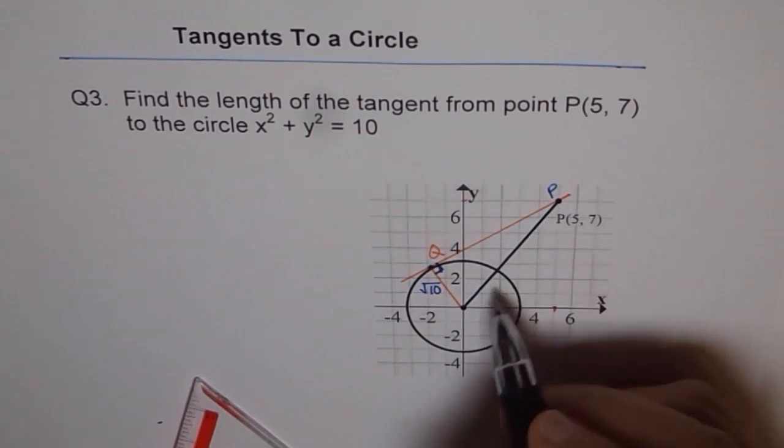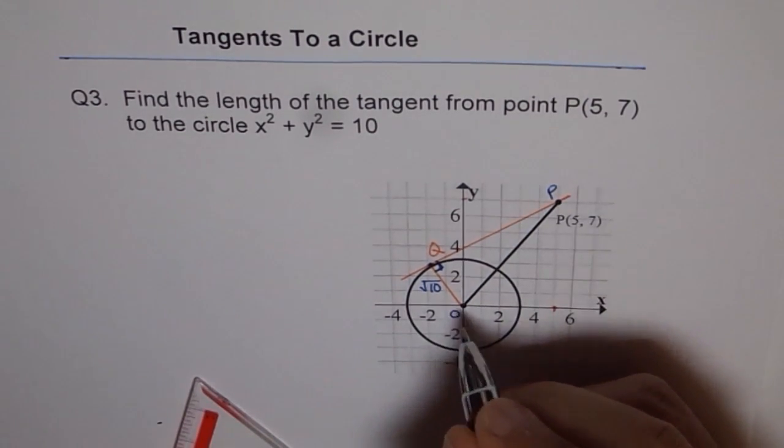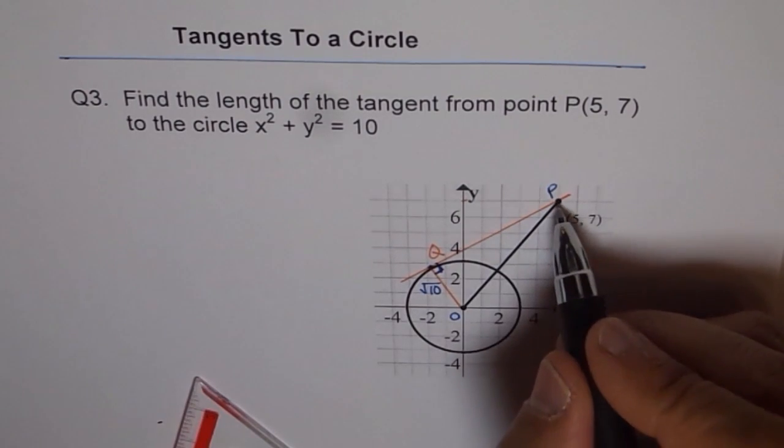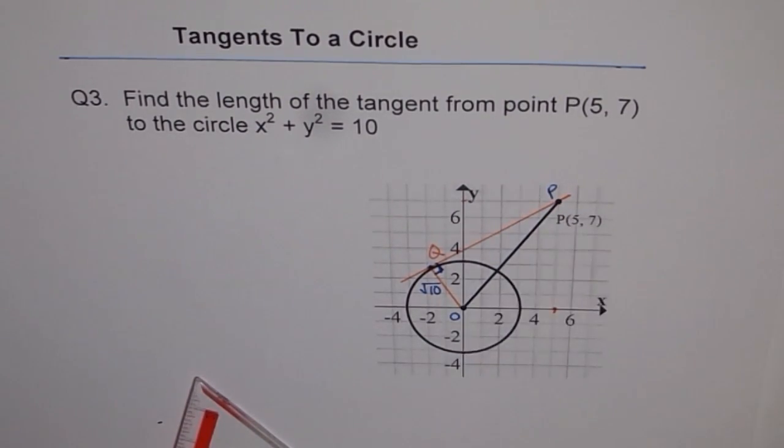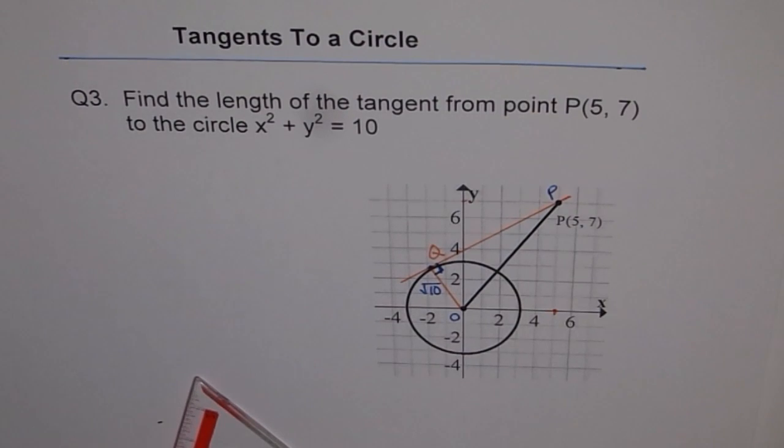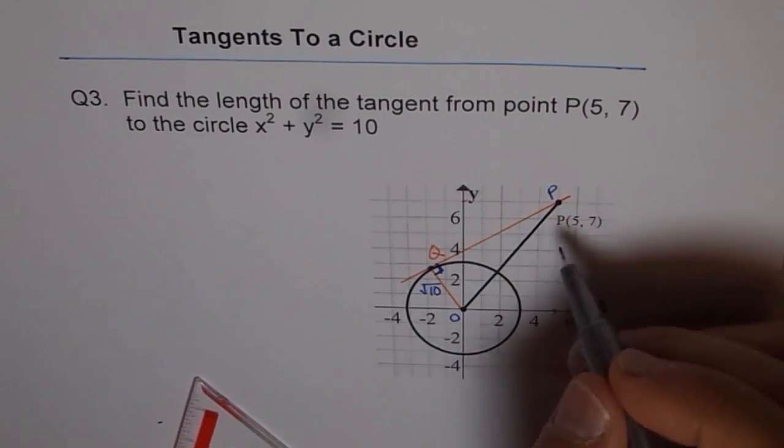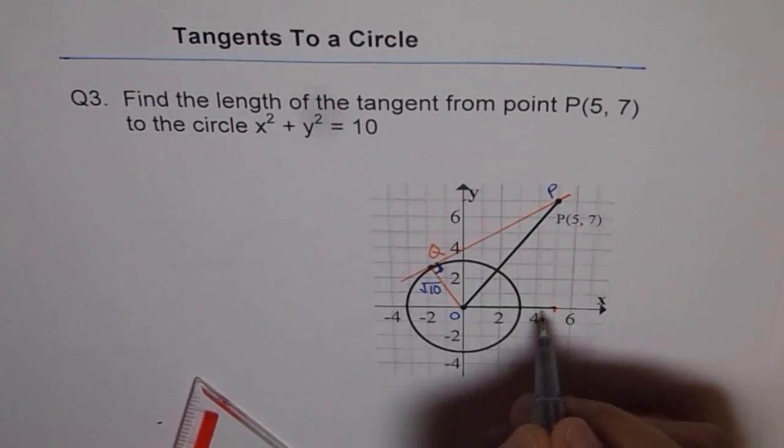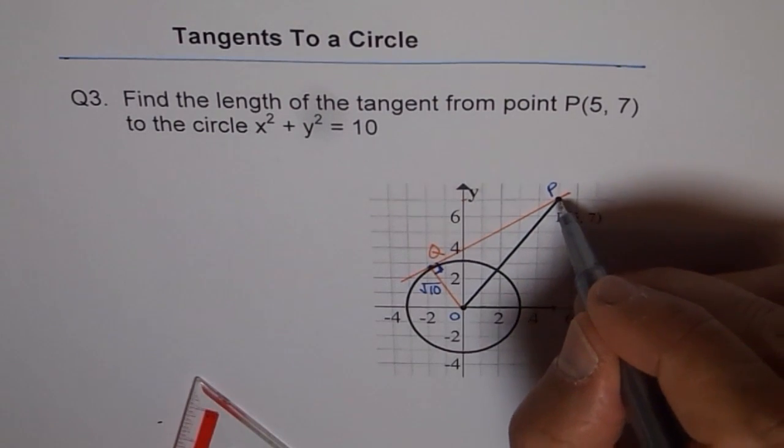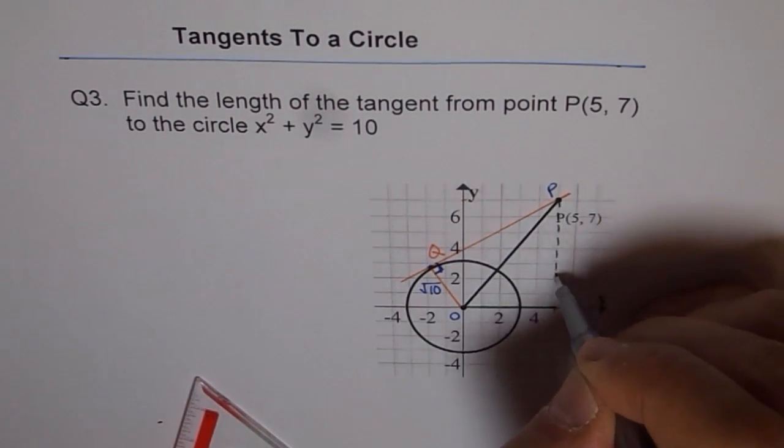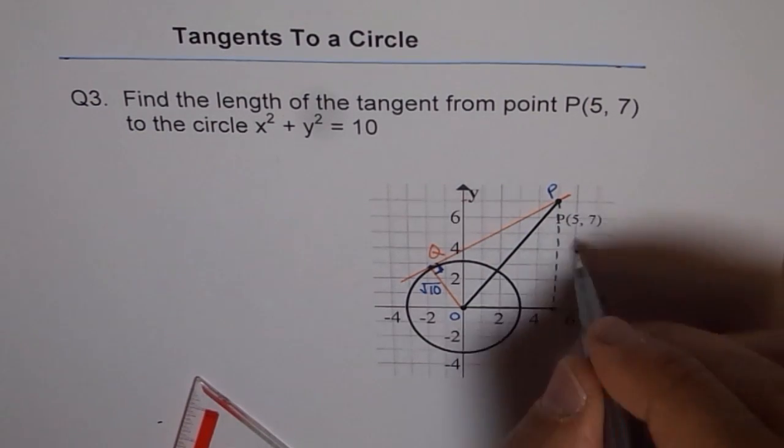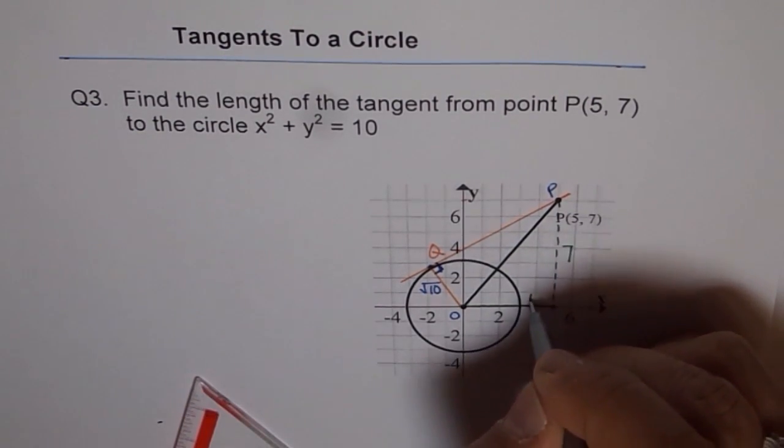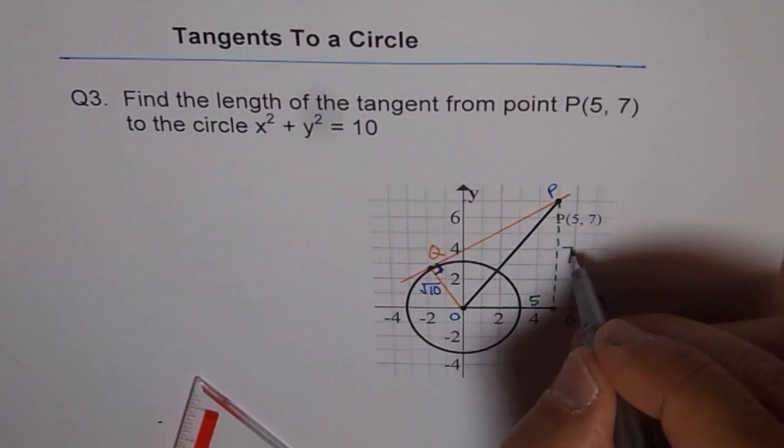So we need to find first the length OP. Let me write this as O as the origin. So length PO. Well, that is easy for us to find. What we can do is, we can use Pythagorean theorem to find PO. The given point is (5,7). That means from here to here, this length is 5. And if we drop a perpendicular like this here, that should be 7. So this side is 7 for us. This is 5. If this is 7, that is 5.